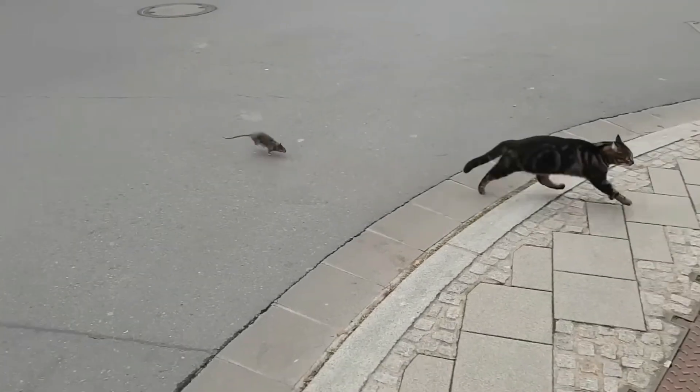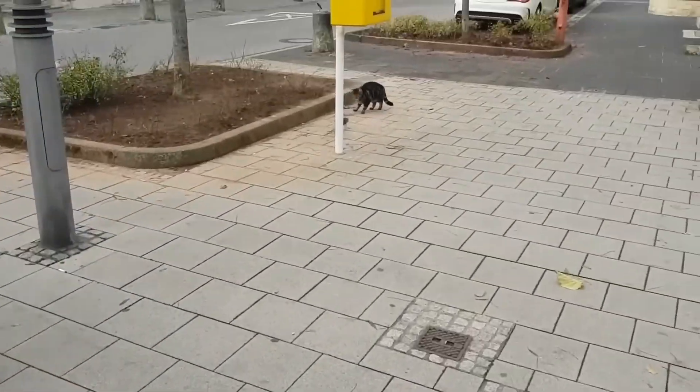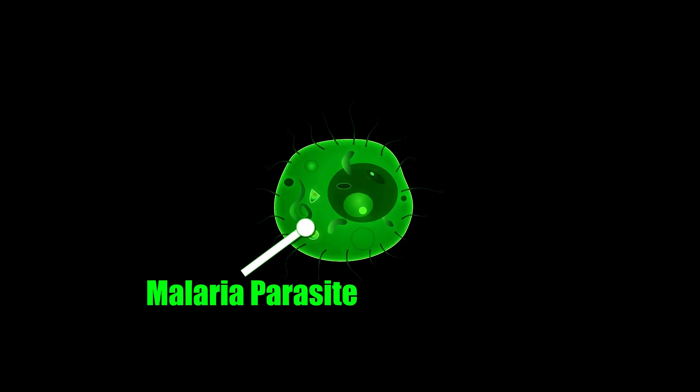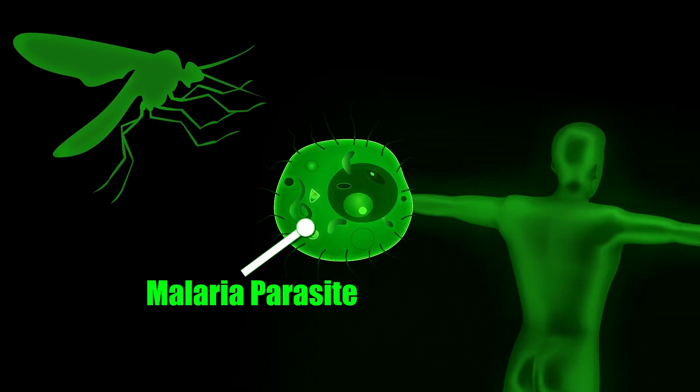While some parasites learned how to control their host's mind, others developed complex ways to spread, moving between different animals and environments. A good example is the malaria parasite. It operates across two species, humans and mosquitoes, and runs different life cycles inside each one.